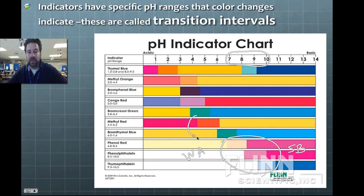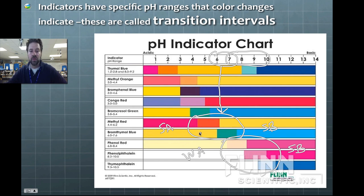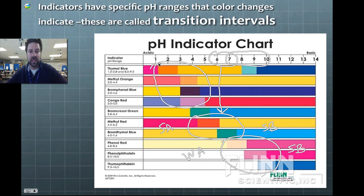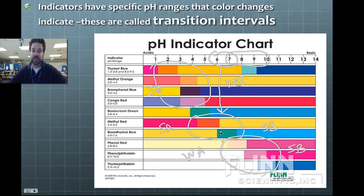Bromethymol blue and methyl red work better in the middle pH range, around six to seven, making them good for strong acid and strong base combinations — they indicate when you cross from the acidic to the basic side. Then there are indicators effective in the acidic range from about one to five: thymol blue, methyl orange, and bromphenol blue are all effective with a strong acid and weak base combination.